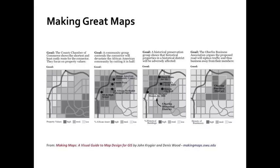The first map on the left shows how that connector road might go through an area with relatively low property values, which from a developer perspective might be good. The second map shows how that same connector road would go through an African-American neighborhood and bifurcate the community, which would be bad. The third map shows how that same connector road would actually impact a historic district. And finally, the fourth map on the right shows how that connector road would actually go around the densest area of business activity in the city, which could be bad for business.